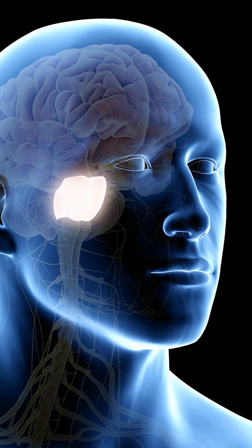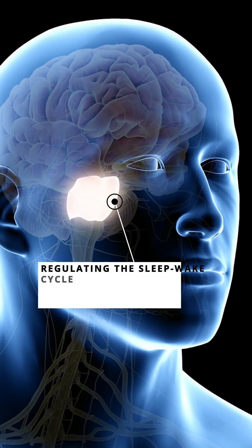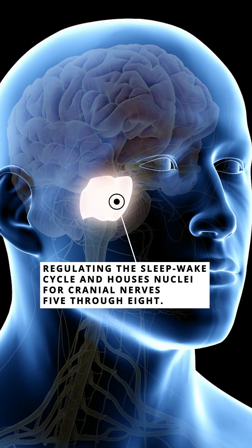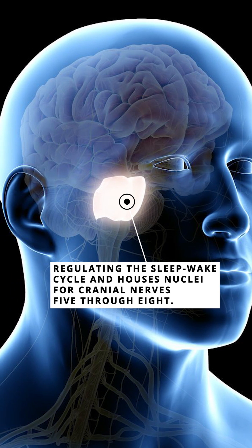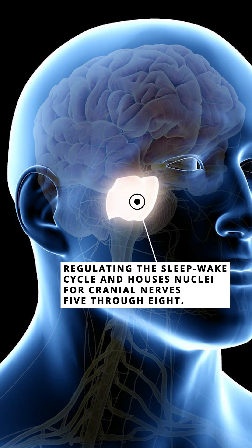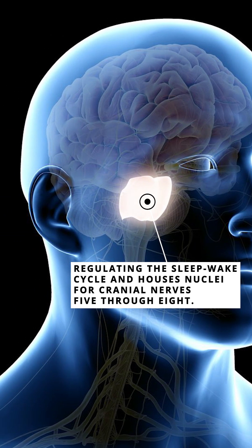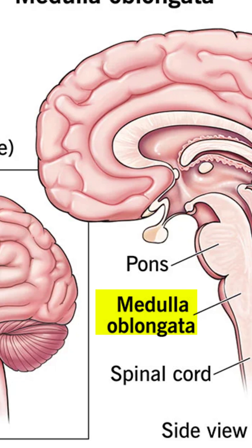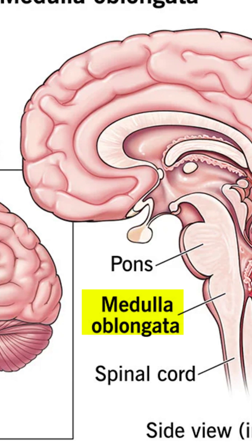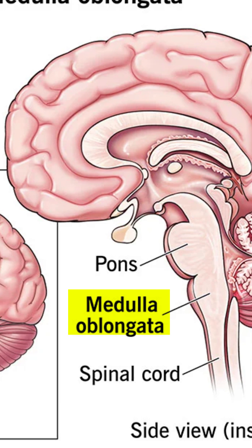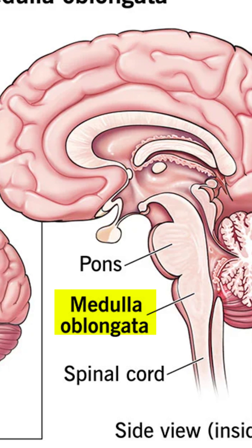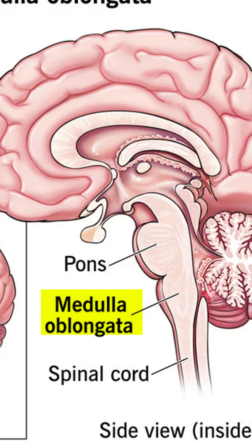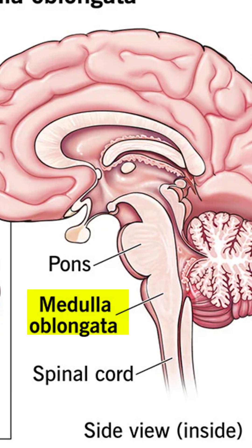The PONS also plays a role in regulating the sleep-wake cycle and houses nuclei for cranial nerves 5 through 8. Located closest to the spinal cord, the medulla oblongata is the most inferior part of the brainstem.